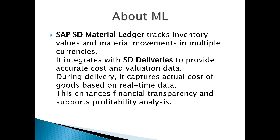This total cost we can maintain in your material master accounting tab — there is standard price and moving average price. If it is moving average price, finance can change that cost based on the period. For example, I created a sales order last month and I am creating delivery this month. Whatever current value is there in your material master, that is what it will pick — it will show as your ledger cost.